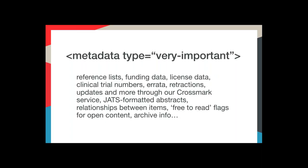We collect a fair amount of other metadata as well. It's not traditional bibliographic metadata, so it's not something you'd use when citing an item, but it can be just as important for describing your content and where it sits in relation to other scholarly objects. We collect archive info — that's where you intend to archive your content once you stop publishing it. We collect free-to-read information for open content, reference lists, funding data, license data, clinical trial numbers, information about errata, retractions, and updates through our Crossref service. We're also starting to collect some information about relationships between items.